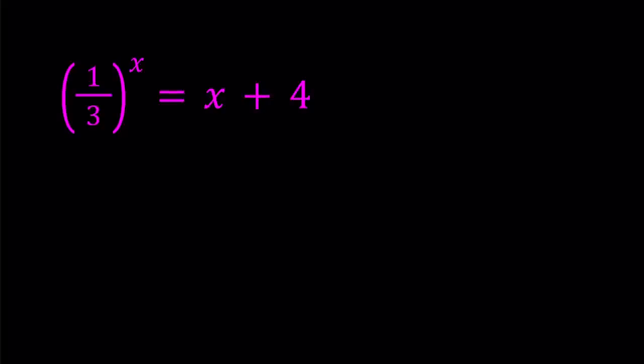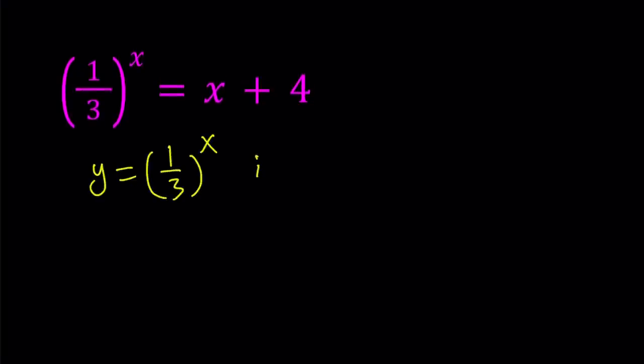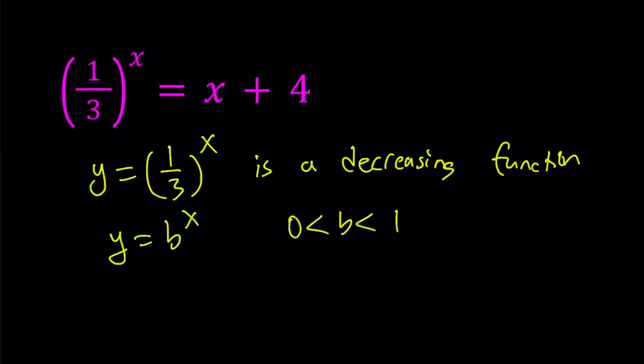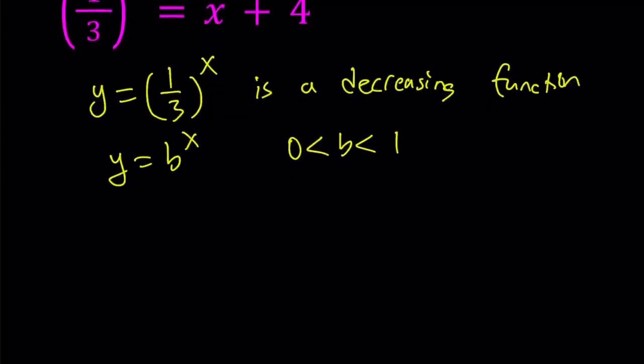I'm going to present two approaches. My first approach is basically looking at the left hand side as a decreasing function. In general, y equals b to the power x is decreasing if b is between 0 and 1. You don't want b to be negative or zero, you want it to be positive, so there are two options.